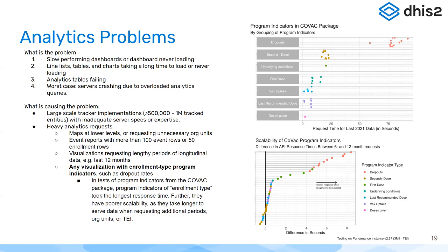The scale of these requests is really difficult to process. Probably the most important and most actionable issue is any visualization that has an enrollment-type program indicator. An enrollment-type program indicator means you're querying all the data for all enrollments. We have two types of program indicators — event and enrollment — and enrollment-type produce massive queries, as shown in these charts. The dropout indicators from the CoVax package are enrollment indicators and are massive requests. There's a lot you can do to improve performance if you can minimize the use of enrollment indicators.